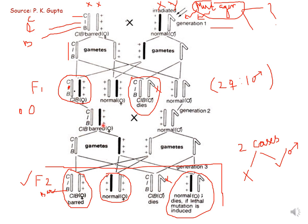From F1 generation, the bar-eyed CLB female will be taken and crossed with a normal male. This female is special because she has one X chromosome received from the irradiated male and the other X chromosome carries CLB genes. She is identified from other F1 flies by her bar eye. She also carries the irradiated chromosome from the mutagen-treated male. In F2, the heterozygous bar-eyed female will survive because she carries a wild-type gene alongside the lethal gene.